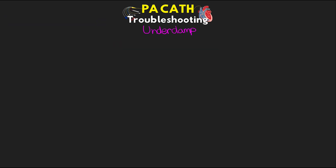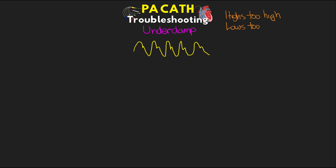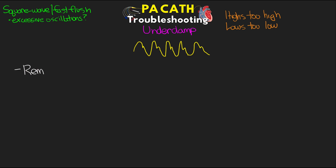Next is the under-damped waveform — the opposite of over-damped. You may notice that your patient has an under-damped, or whip, waveform where the highs are too high and the lows are too low. If this is suspected, perform that square wave fast flush test and ensure under-damping by looking for those excessive oscillations returning to baseline. Typically this is caused by too much tubing or too many stopcocks, so ensure you don't have any unnecessary extensions or stopcocks in place, and if so, remove those.